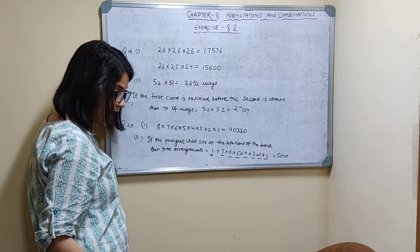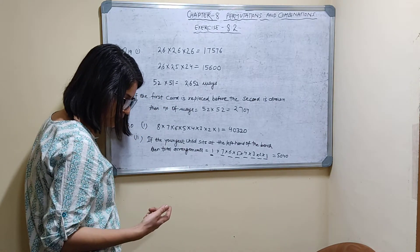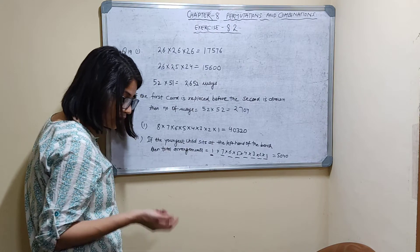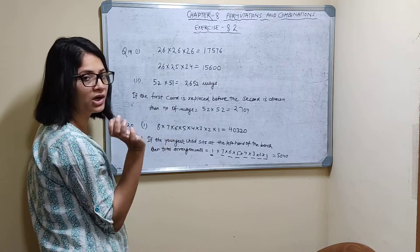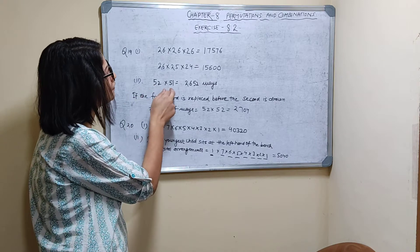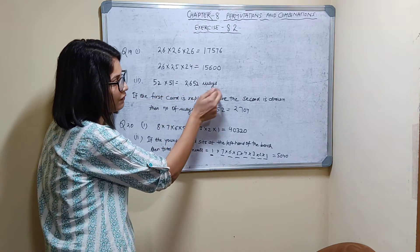So 52 choices are there and it is given without replacement. Without replacement. So for second only 51 choices are there. So 52 into 51, that is 2,652 ways.